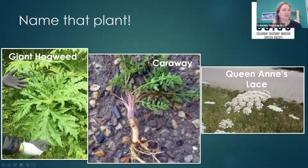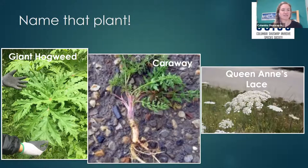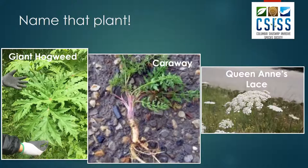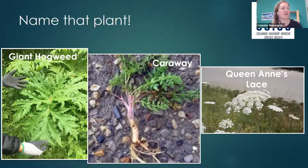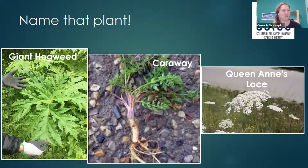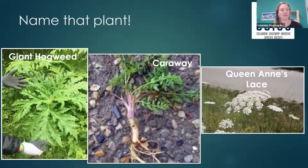Quiz answers: the first plant is giant hogweed — it has quite large leaves that are really dissected and sharply toothed, bright green and waxy, not to be confused with cow parsnip. Caraway has really finely divided, fern-like leaves and a black taproot with a white core. Queen Anne's Lace has very finely divided leaves and possibly one purple flower in the middle of the inflorescence. Everyone did really well on that one.